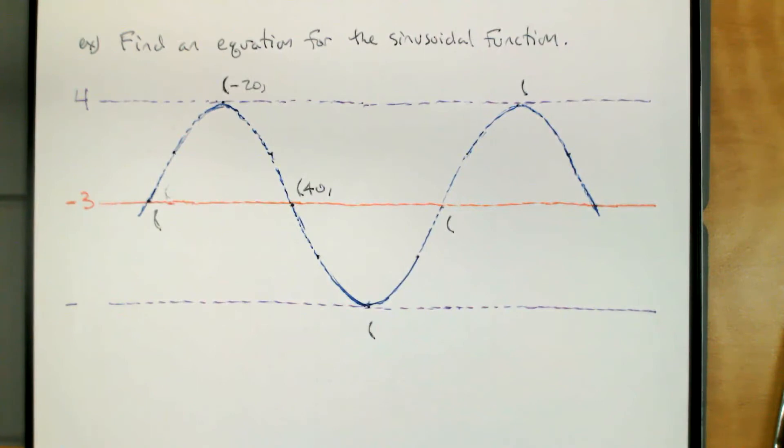Now we want to play the game in the other direction. We've drawn a graph. I'm only partially filled in this graph because the rest of it we can figure out. But what we want to do is looking at a graph, figure out what the equation is.